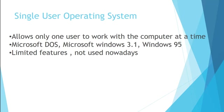First we will see what is a single user operating system. A single user operating system allows only one user to work with a computer at a time. If I am using the computer, at the same time nobody else can use the same computer — its memory, CPU, and resources — even connecting remotely. Microsoft DOS, Windows 3.1, Windows 95 are all single user operating systems. Initially we used only single user operating systems, which had limited features, and nowadays they are not being used.